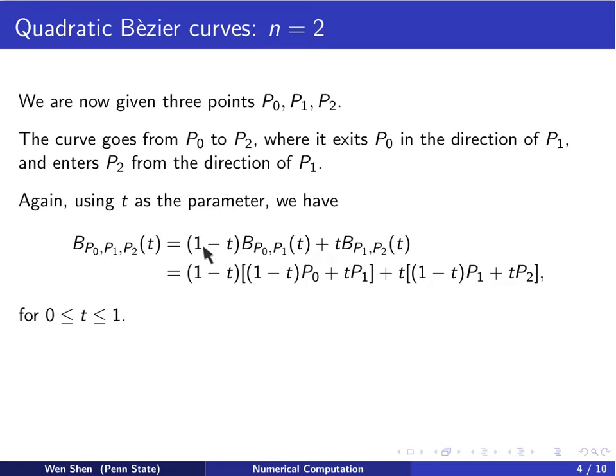We multiply the left one by 1 minus t and the right one by t, and add these two functions together. Plugging in the expressions for these linear Bézier curves as convex combinations of P0 and P1, and P1 and P2, we get the expression. This is valid for t ranging from 0 to 1.